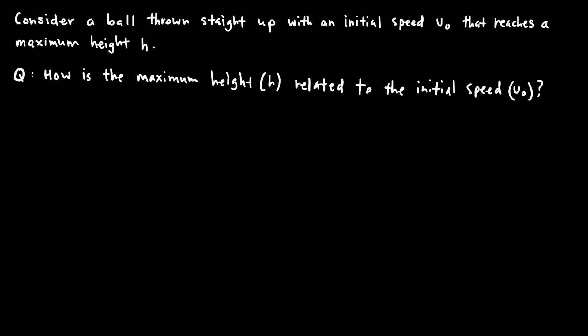We will start by drawing a diagram that shows what's happening. The object starts on the ground at an initial position of zero. It's thrown straight up with initial speed v_naught. The object will go all the way up to some maximum height, momentarily stop, then turn around and fall back down to the ground.